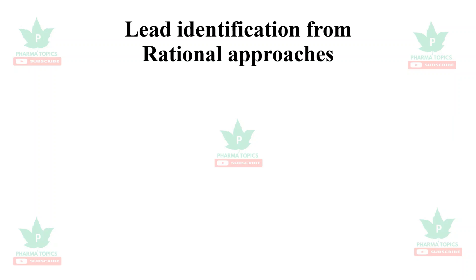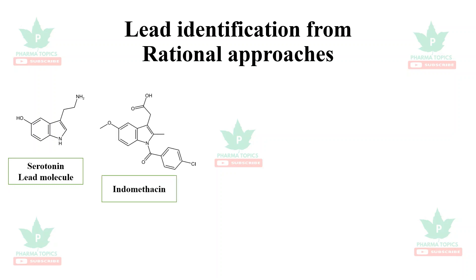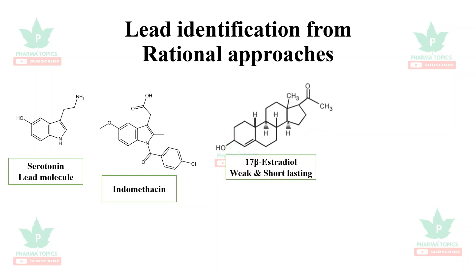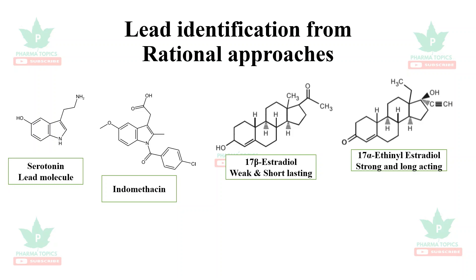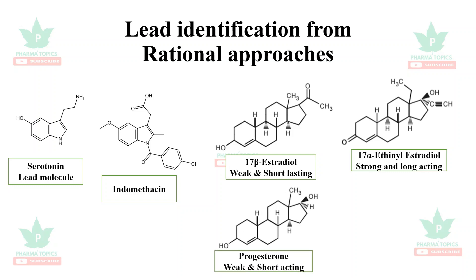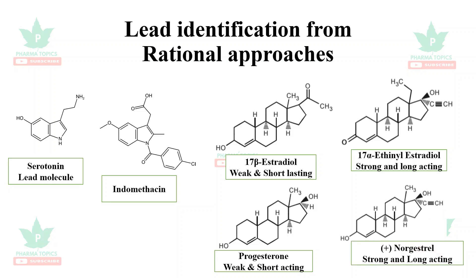In rational approaches, serotonin was taken as a lead molecule — a local neurotransmitter — from which the famous drug indomethacin was derived. 17-beta estradiol is a hormone that was weak and short acting, but its derivative 17-alpha estradiol possesses strong and long-acting activity. Similarly, progesterone is weak and short acting, but its derivative norgestrel possesses strong and long-acting activity.